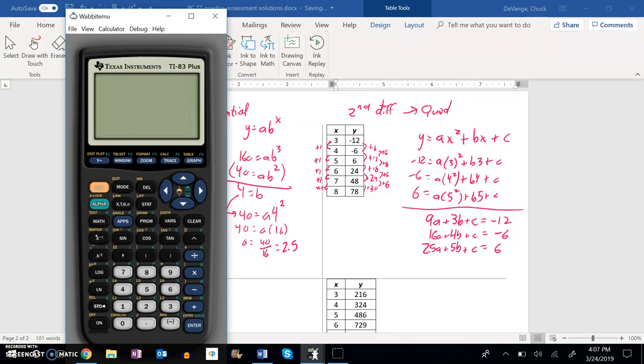So I'm going to go into my matrix menu. I'm going to turn it on. Then I'm going to go into my matrix menu and edit this 3 by 4. It's already 3 by 4. So I have 9, 3, 1, negative 12.